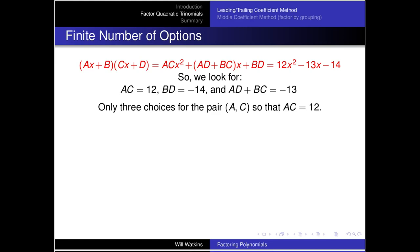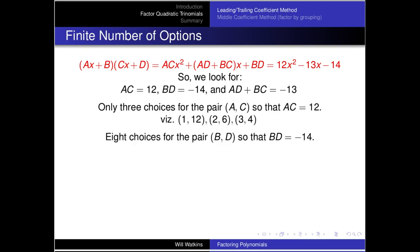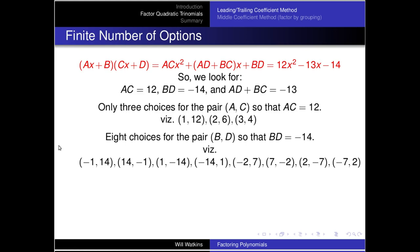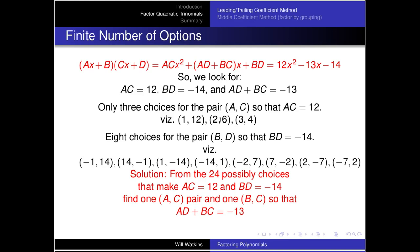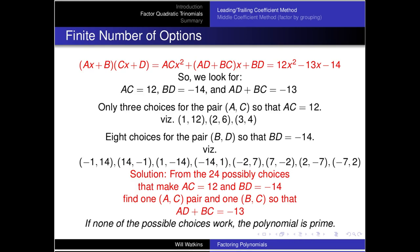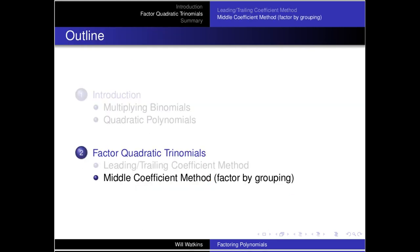There are only three integer choices for a and c that multiply to give 12, and eight choices for b and d that multiply to give −14. So from those 24 possible combinations, we check possibilities until we find an ac pair and a bd pair such that ad + bc = −13. If none of those possible choices work, then we say the polynomial is prime.